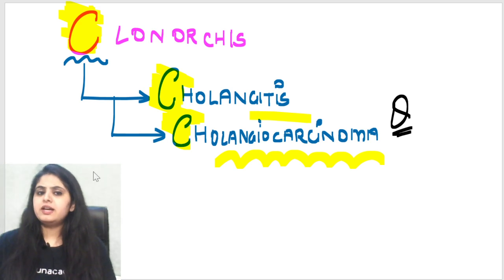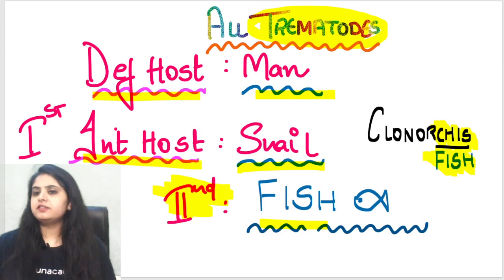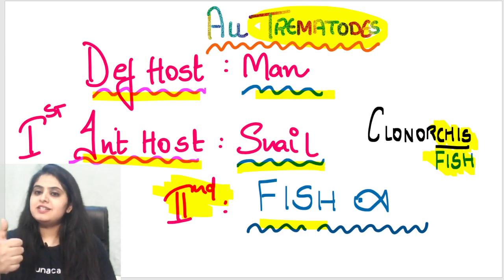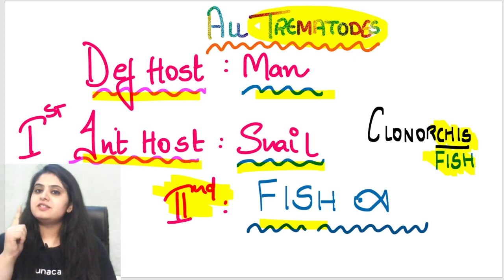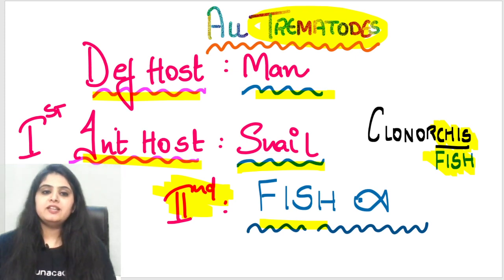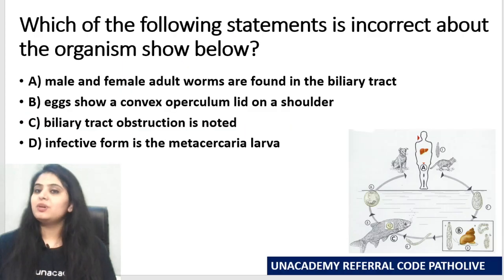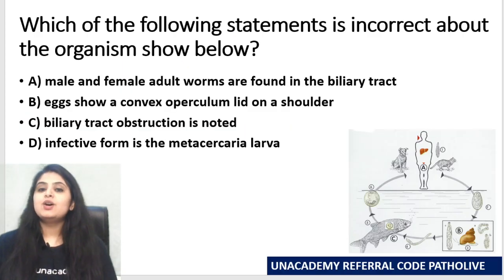If you've understood that well, coming back to where we started: definitive host — man; first intermediate — snail; second — fish. Quickly give me the answer to one question and we are done for the day.